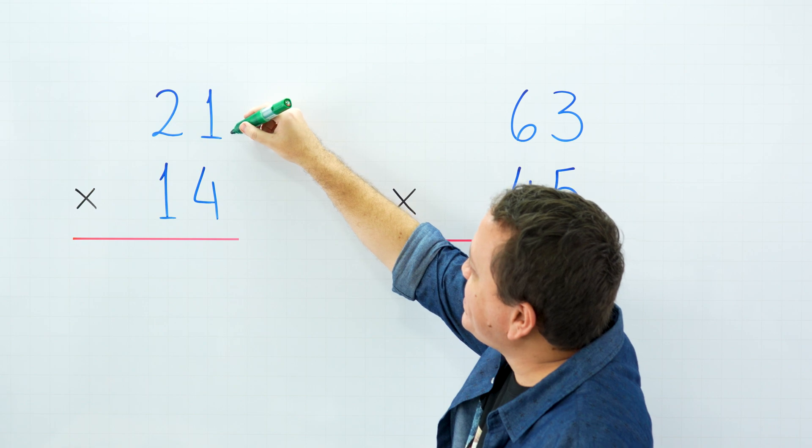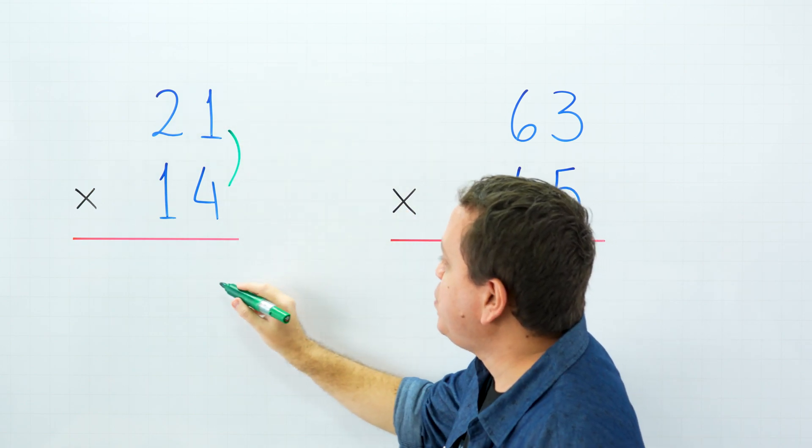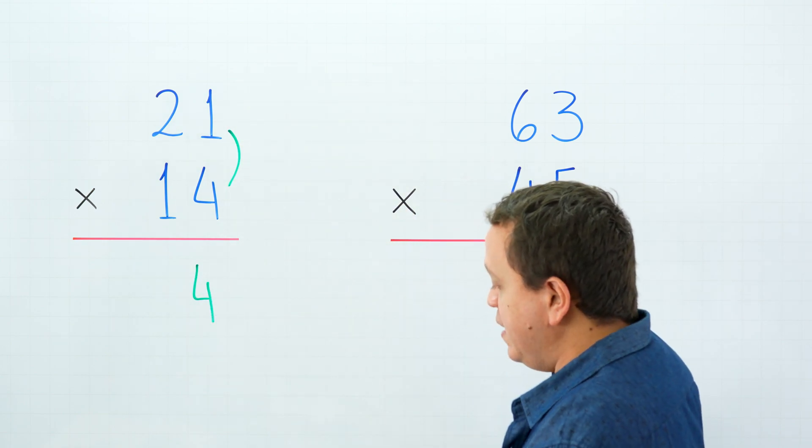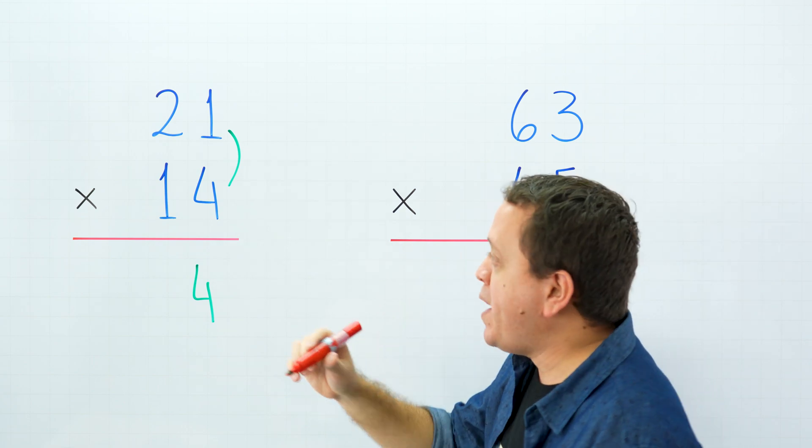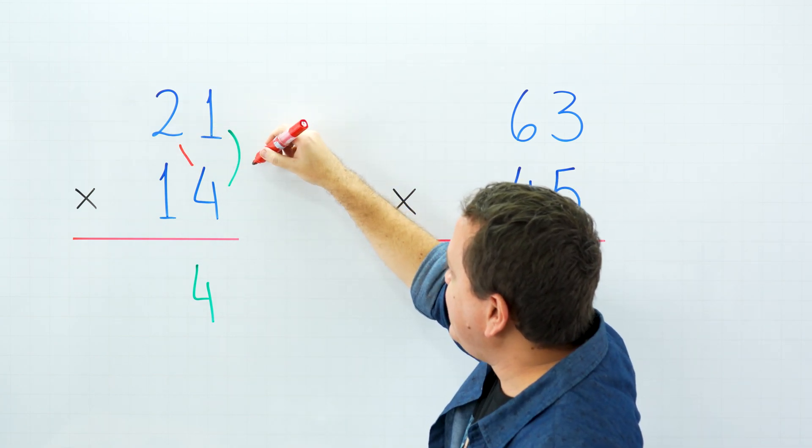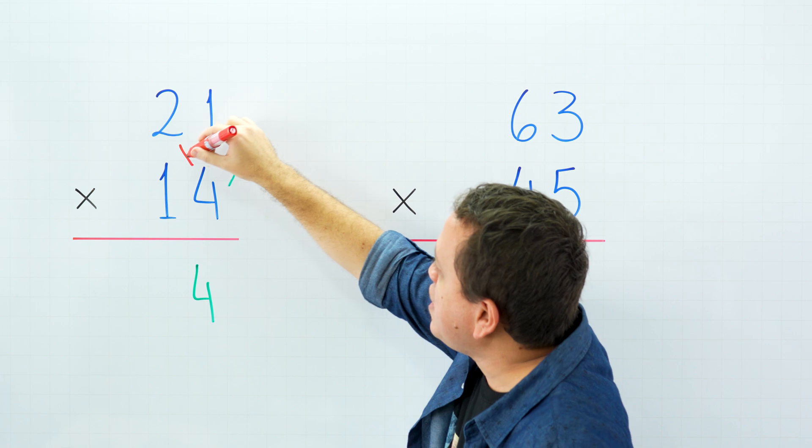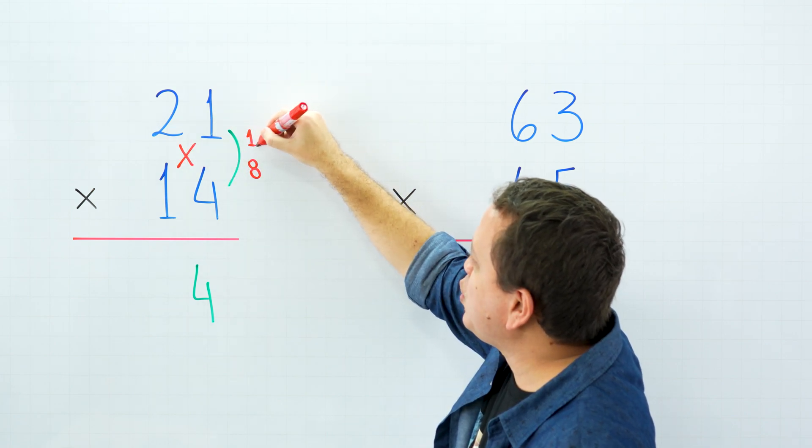First, we are going to multiply the digits on the right side, and 1 times 4 is 4. In the next step, we are going to cross-multiply. 2 times 4 is 8. On the other side, 1 times 1 is 1.